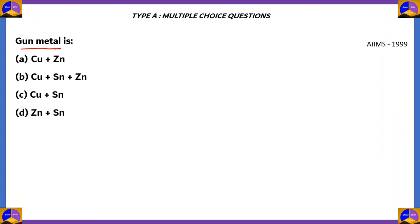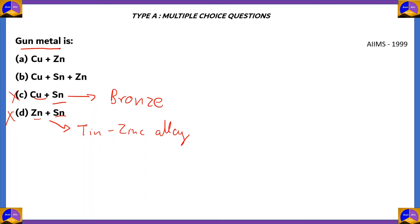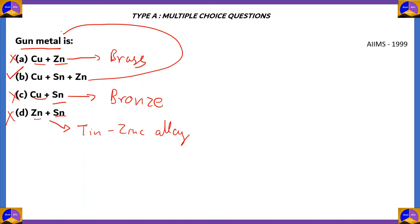Next question: Gun metal is — we need to find which combination gives gun metal. Option D, Zn plus Sn: zinc and tin form a tin-zinc alloy — this is not gun metal, so option D is incorrect. Option C, Cu plus Sn: copper plus tin gives the alloy bronze — option C is incorrect. Option A, Cu plus Zn: copper plus zinc is brass — option A is also incorrect. The right answer is option B, Cu plus Sn plus Zn — the alloy of copper, zinc, and tin gives you gun metal. Option B is the right option.